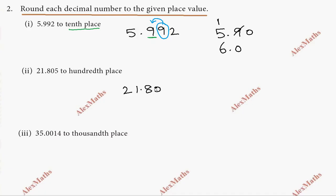Second subdivision: 21.805. Round to the hundredths place. The hundredths place is the second digit after the decimal. So in 21.805, the digit is 0. The digit to the right is 5 — since 5 or more, increase. So 21.805 rounds to 21.81.